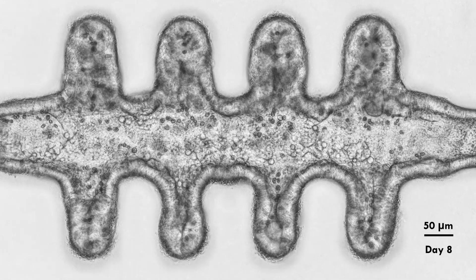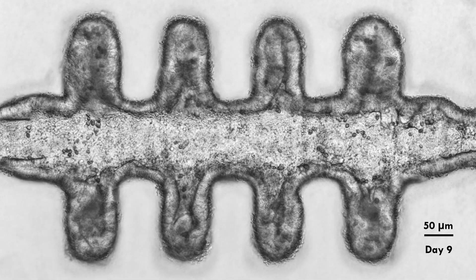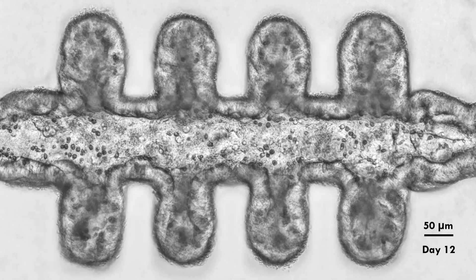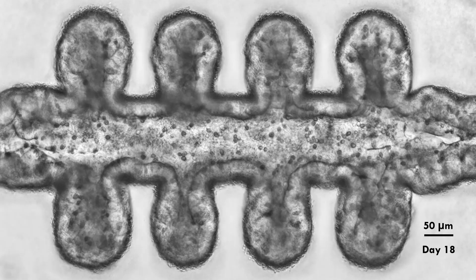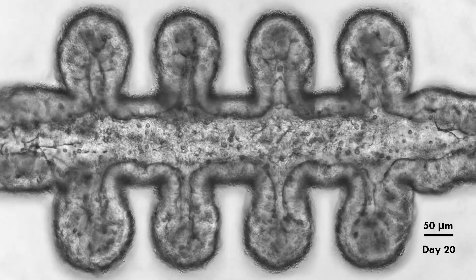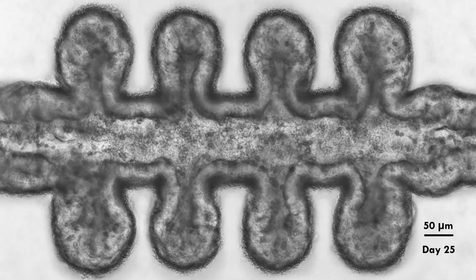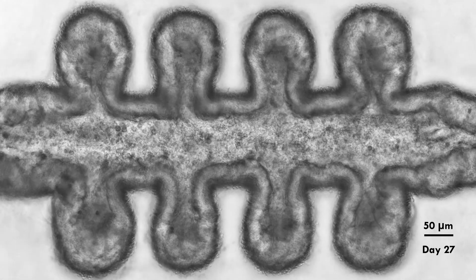Mini guts can grow stably for several weeks to months, preserving the overall tissue anatomy and function. These miniature intestines for the first time establish a long-lived organoid system, recapitulating the homeostasis of the in vivo intestinal epithelium.